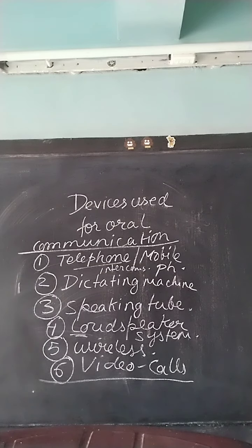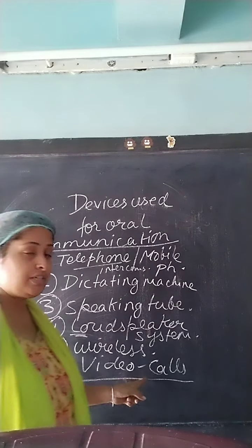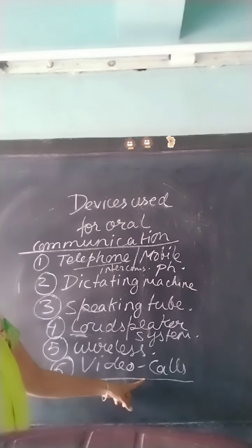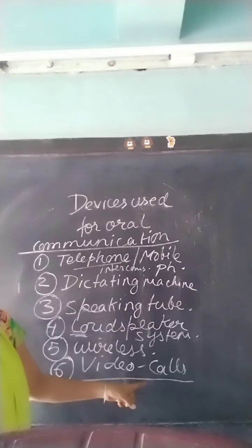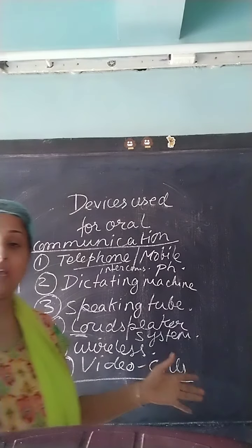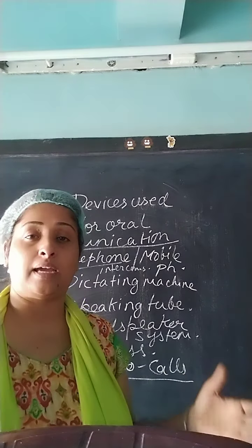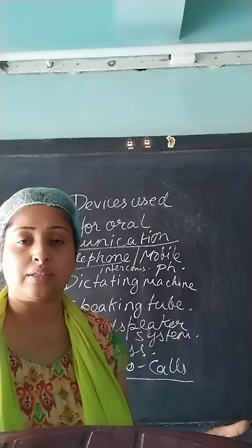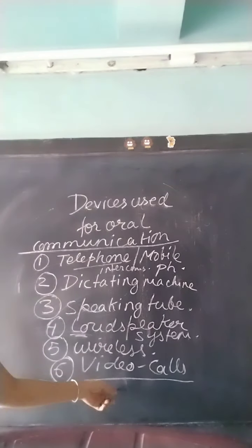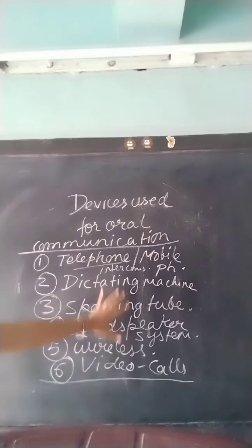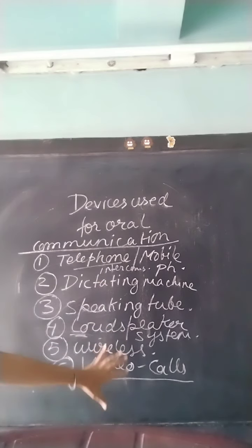Video conferencing is also called a television telephone link. It is a system by which people staying at different places who have a common interest can communicate with each other, consult each other, and share their common interests. People can hear each other, see each other, and listen to each other very easily. So this is another important device used for oral communication, and these are the major devices used for oral communication.